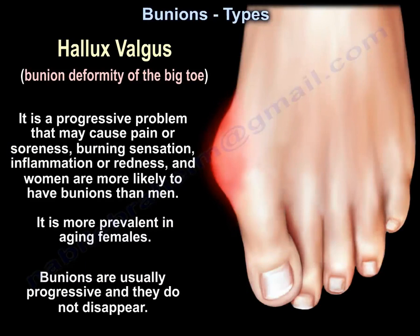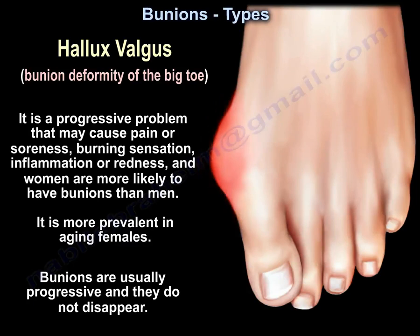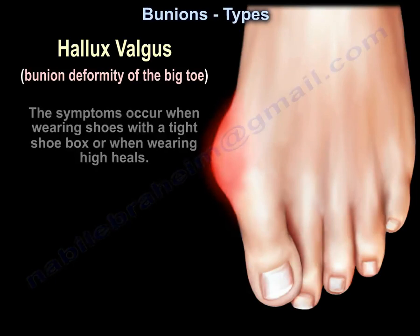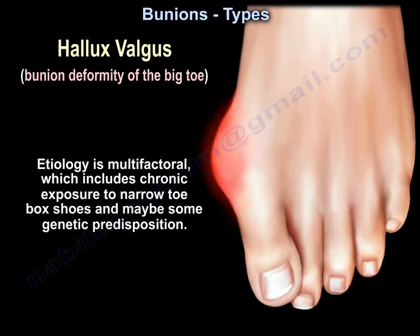It is a progressive problem because pain or soreness, burning sensation, inflammation, or redness can develop. Women are more likely to have bunions than men, and it's more prevalent in aging females. Bunions are usually progressive and they don't disappear. The symptoms occur when wearing shoes with a tight toe box or high heels. Etiology is multifactorial, which includes chronic exposure to narrow toe box shoes and possibly some genetic predisposition.